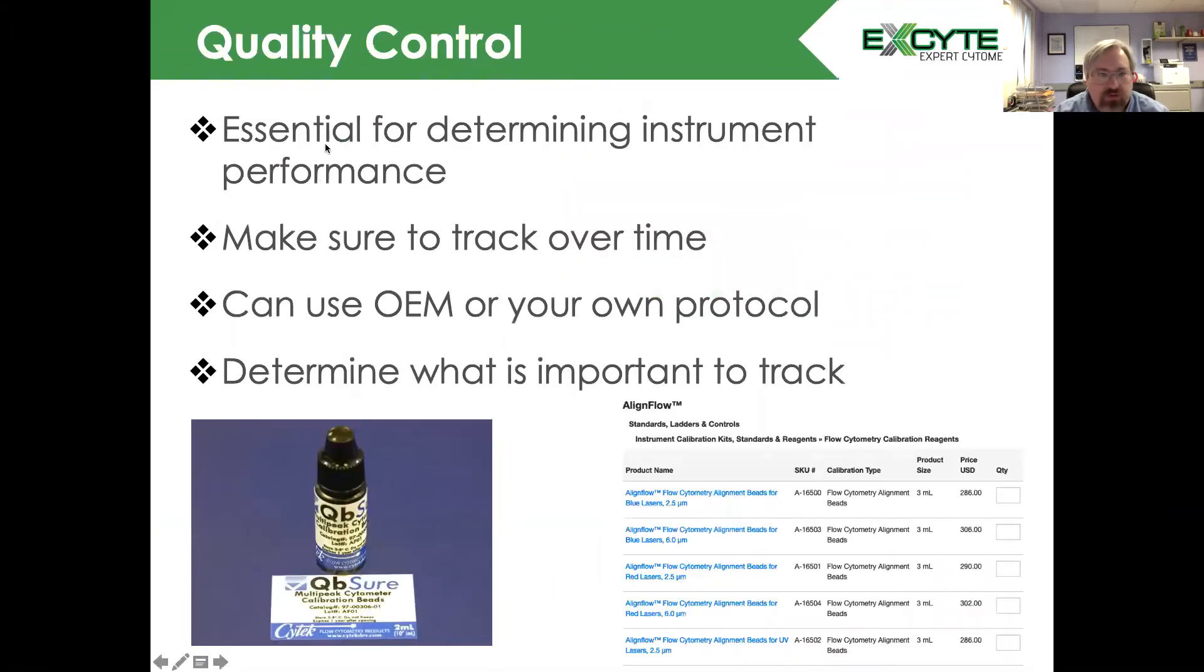Quality control is essential for determining the instrument performance. This is going to tell you how the system is working and making sure that it's working day to day consistently. But you need to make sure you track this over time. If you just do quality control and don't track it, you're not actually performing quality control, because you don't know how the system is changing. You can use the original equipment manufacturers protocols, or you can develop your own protocol. You can buy beads like the QB Sure Beads from Cytec, the Align Flow Beads from Thermo Fisher. You should determine what is important to track.